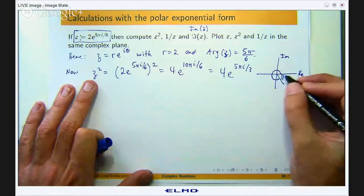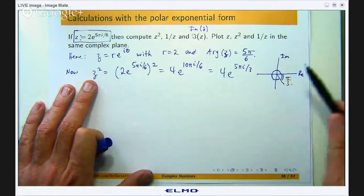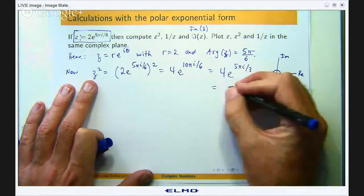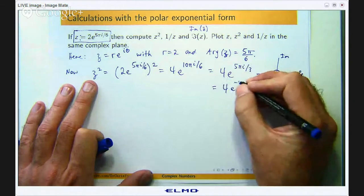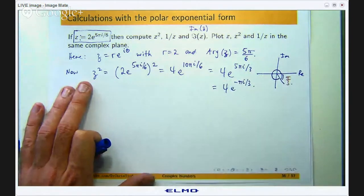Because I start here and I go in a clockwise direction the argument of this would be -π/3. So this is what this would reduce down to.